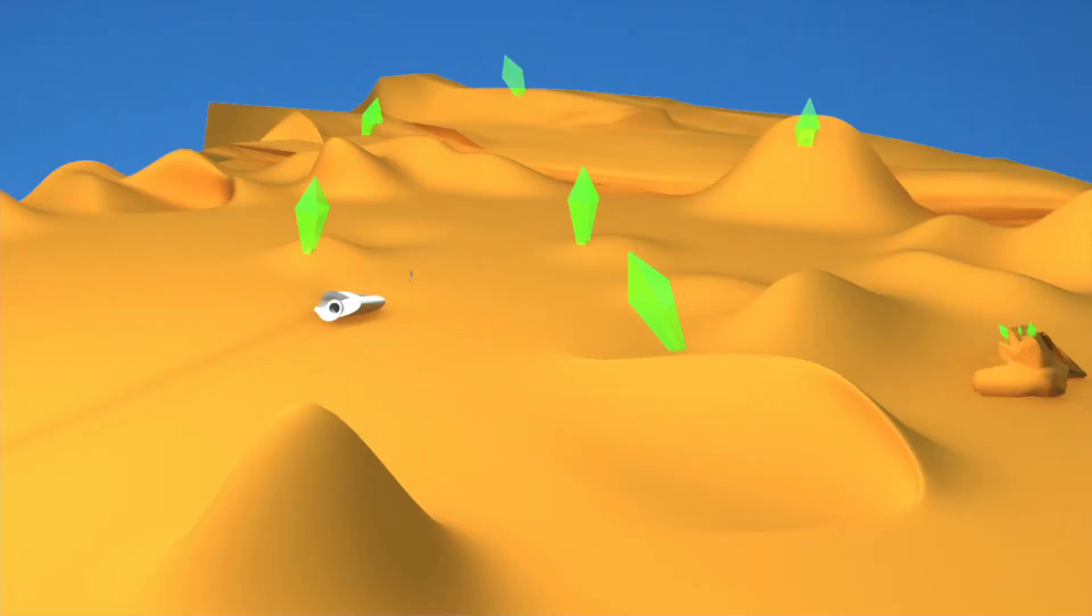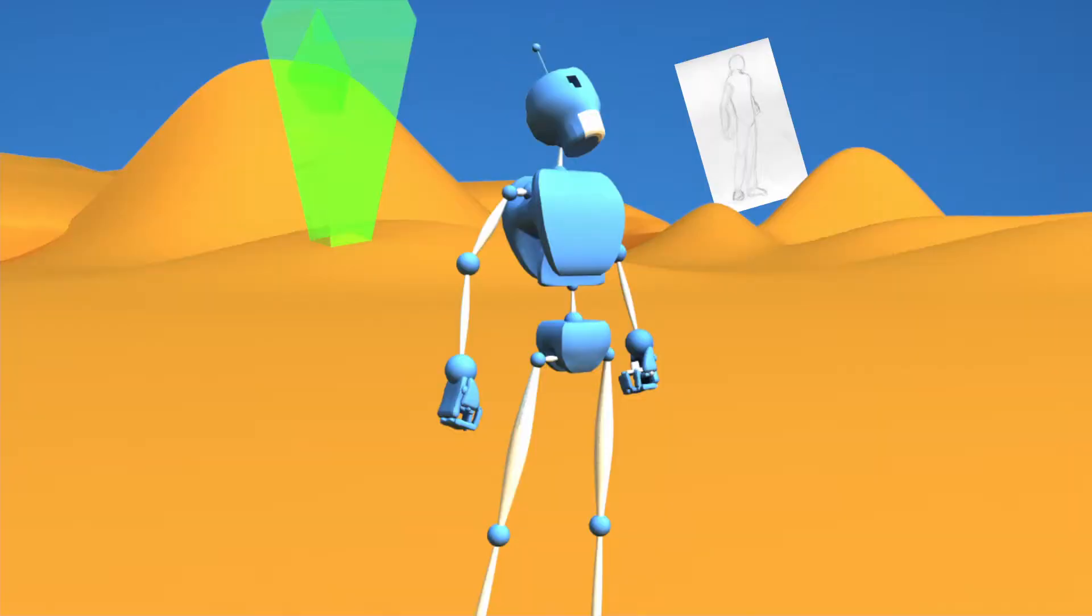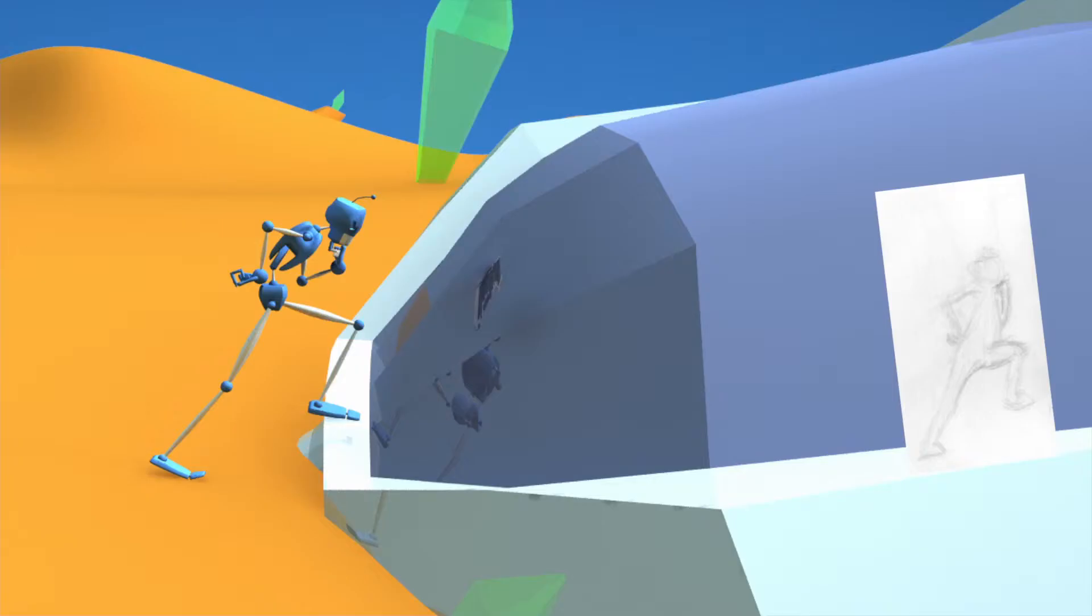This is Geopod 3. Ship lost power and crashed on unknown planetoid. Self is operational and will report findings. The ship could no longer fly. Self was stranded.